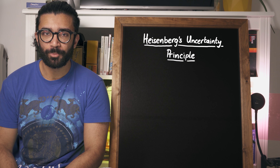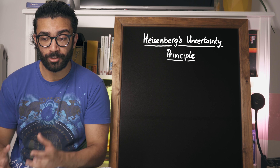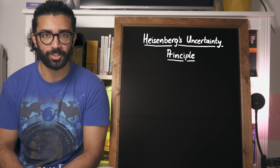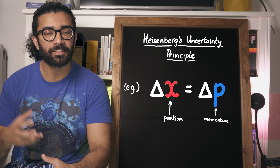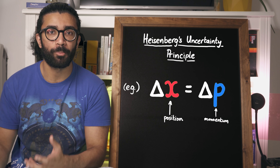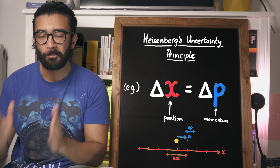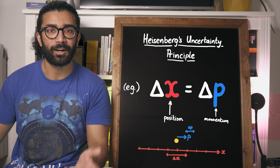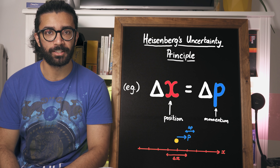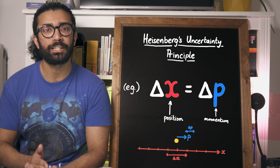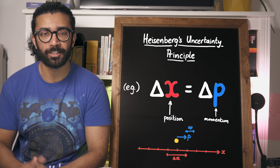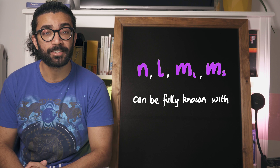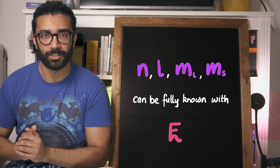You may have heard of Heisenberg's uncertainty principle, which describes certain quantities that we are not allowed to know at the same time as each other. For example, the position and the momentum of a particle — we can't know these two perfectly well at the same time. Well, this doesn't apply to all quantities at once. That version of the uncertainty principle applies only to position and momentum. The quantum numbers we'll be discussing today we are allowed to know at the same time as knowing the energy of our system.